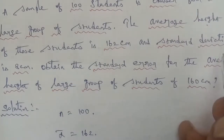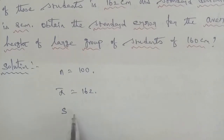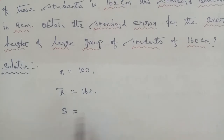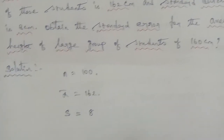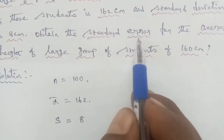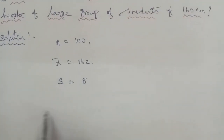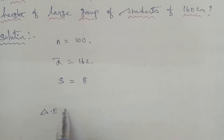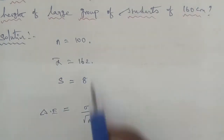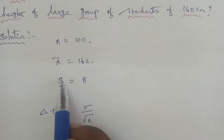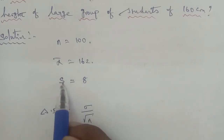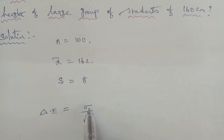The formula for standard error is sigma divided by root n. But since the information given uses the sample standard deviation, therefore we apply the formula: standard error equals sigma by root n, where sigma bar is used.